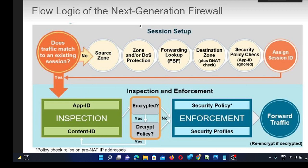A session ID will be created for that packet. This session setup is also called the slow path, while inspection and enforcement is called the fast path. Once the session is created, that packet will be forwarded to the fast path. Here, first it will verify the App-ID and Content-ID inspection, then it will check whether the packet is encrypted or not. If it is encrypted, that packet will be decrypted and then it will again go for App-ID and Content-ID inspection.